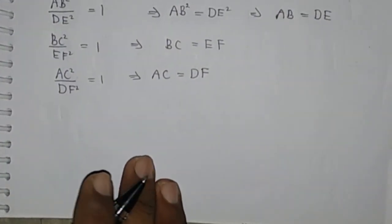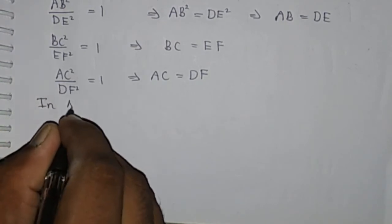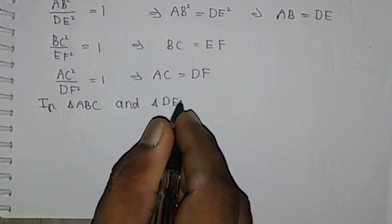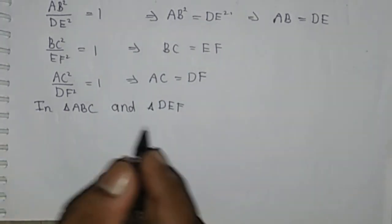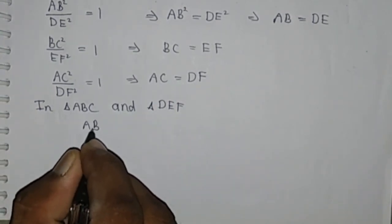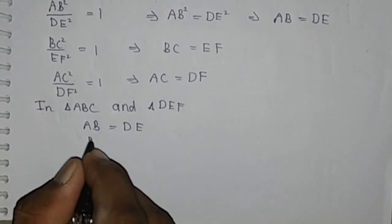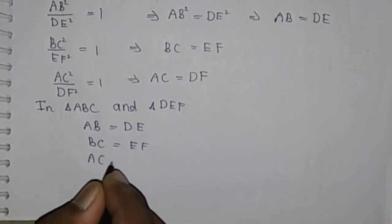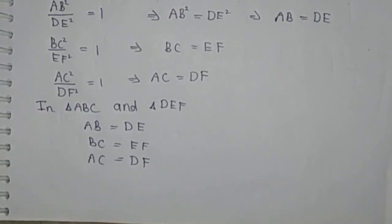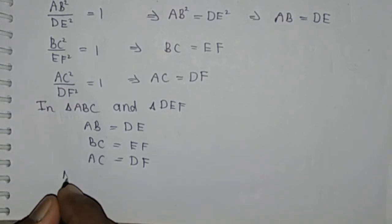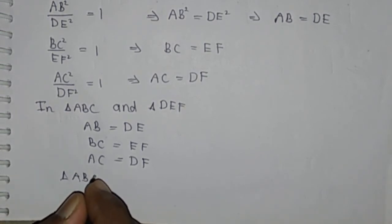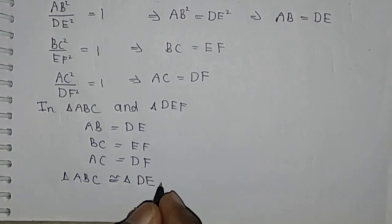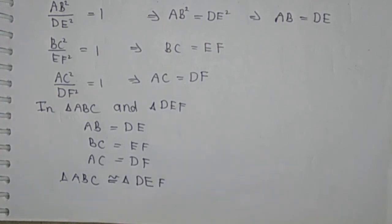Now in triangle ABC and triangle DEF, we have AB = DE, BC = EF, and AC = DF. Therefore, by the Side-Side-Side (SSS) congruency criterion, triangle ABC is congruent to triangle DEF. Hence the triangles are congruent.